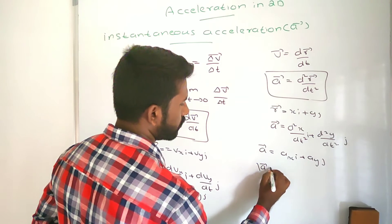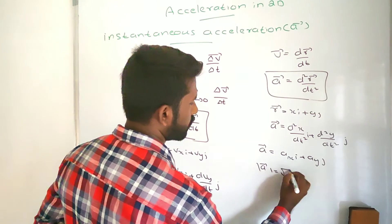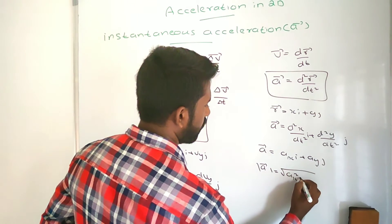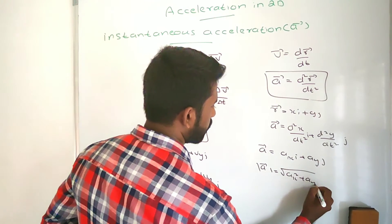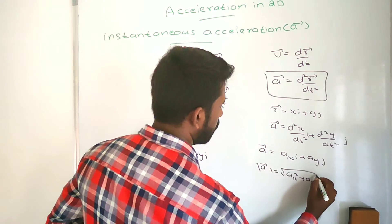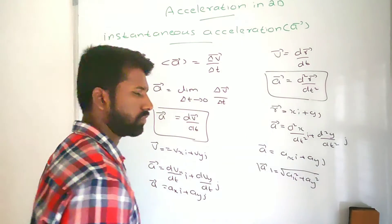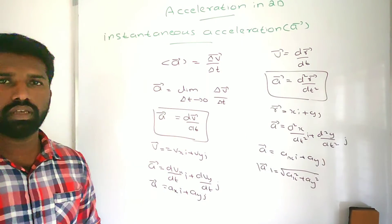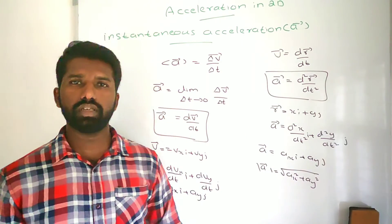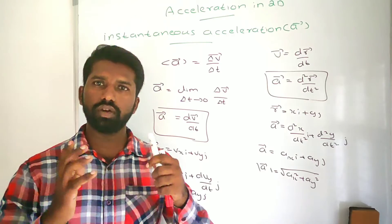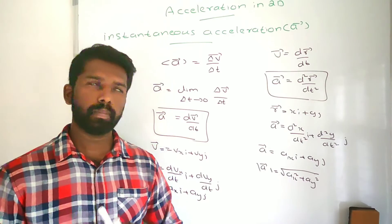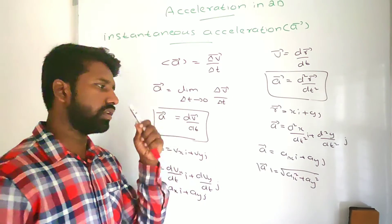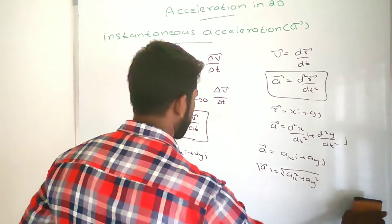The magnitude of instantaneous acceleration is equal to the square root of Ax squared plus Ay squared. Now we will see the direction of the instantaneous acceleration.